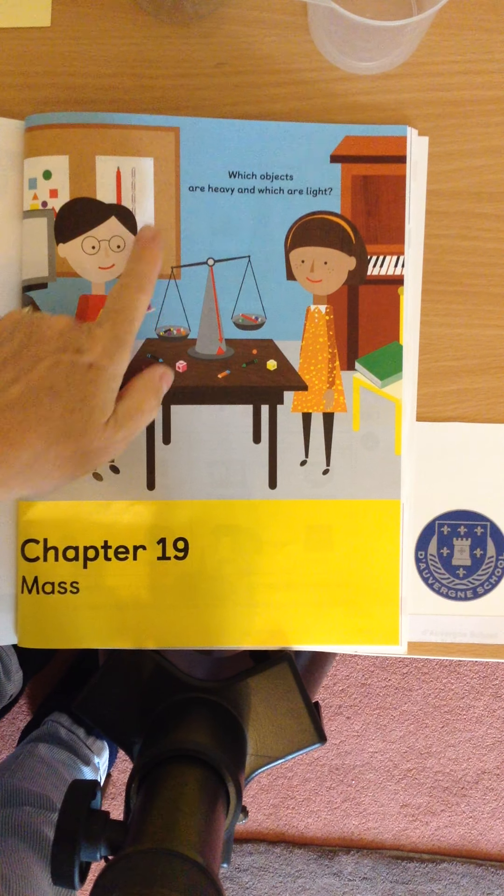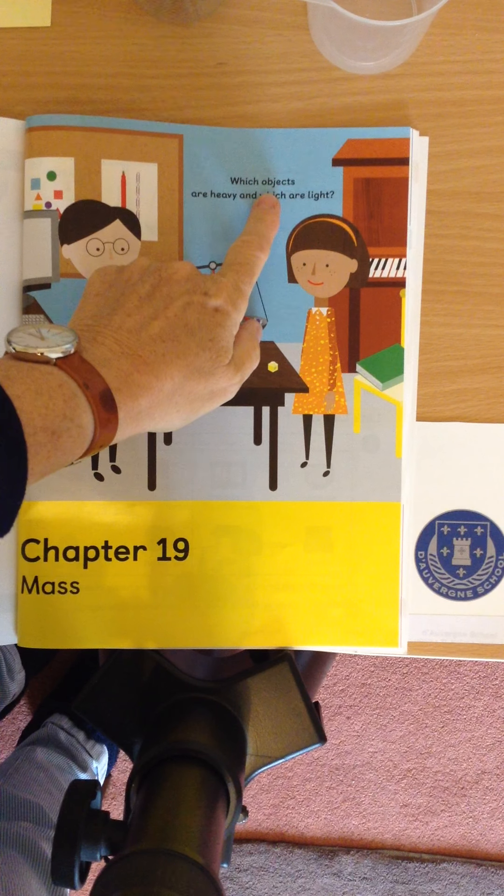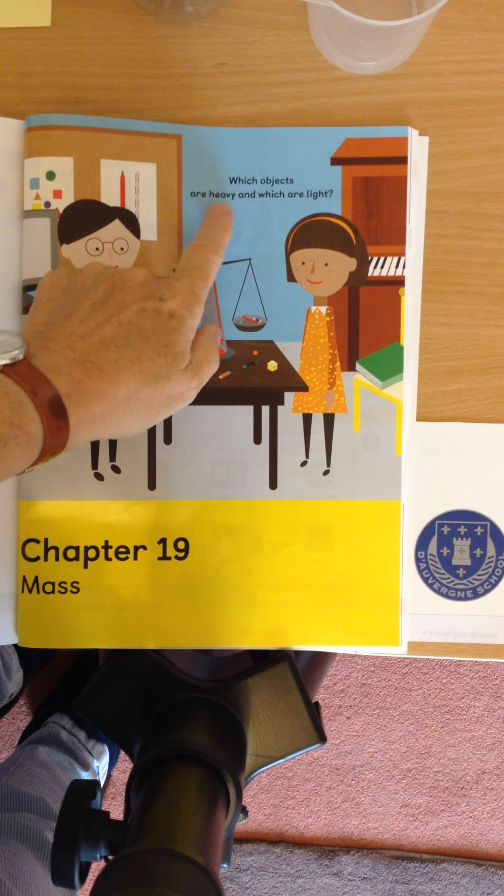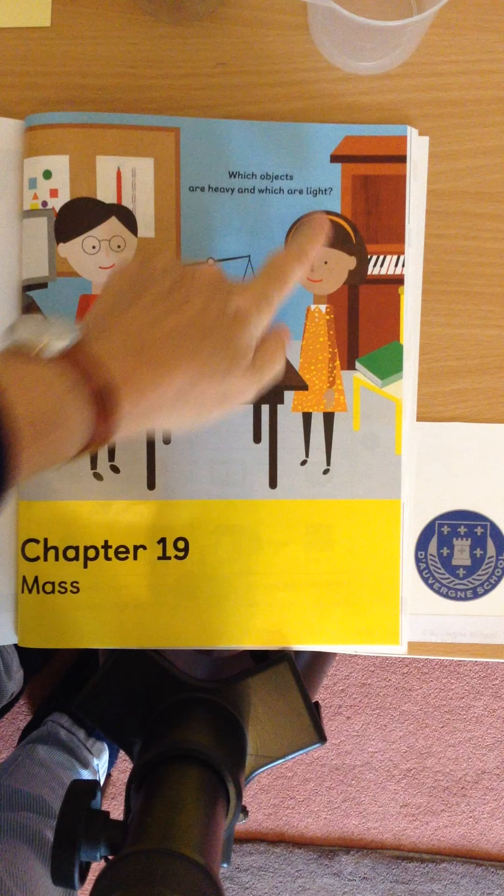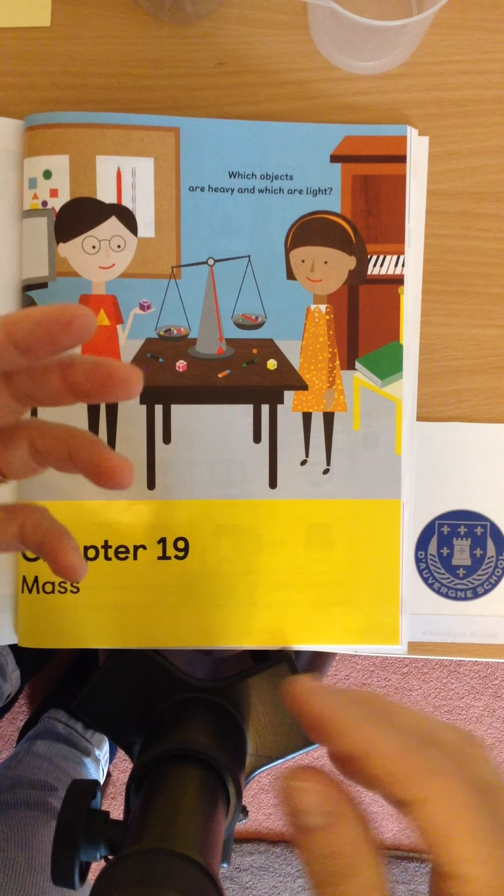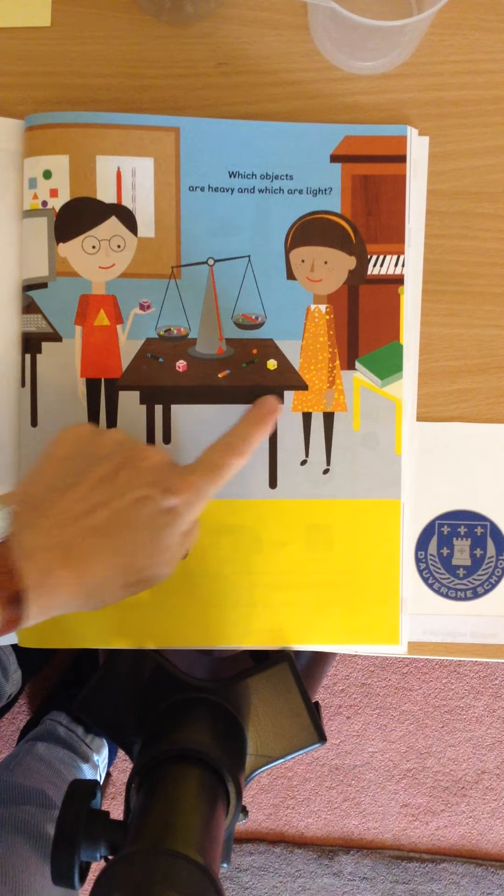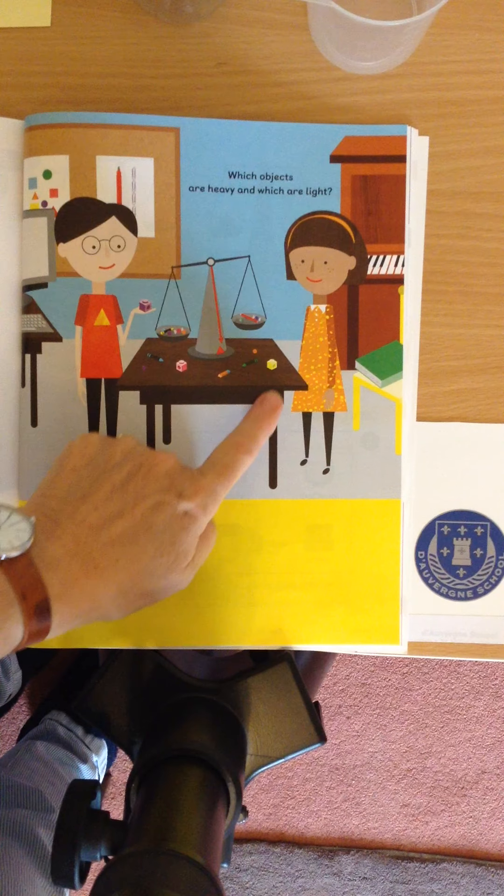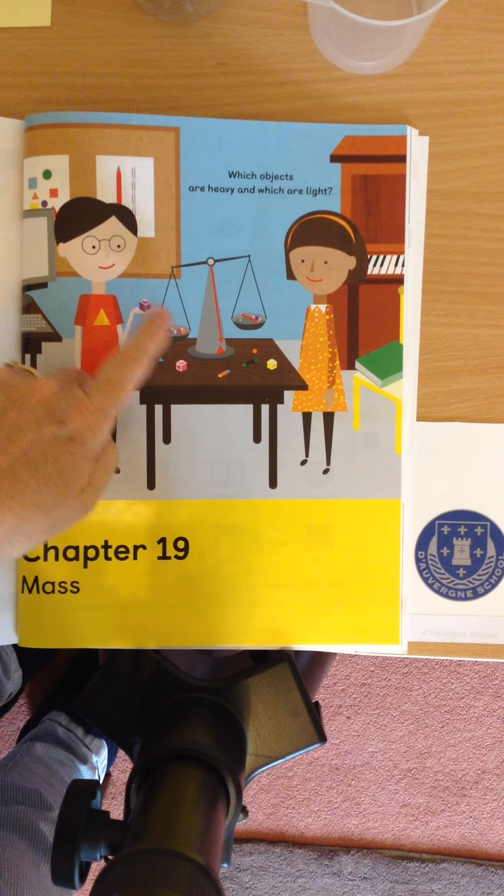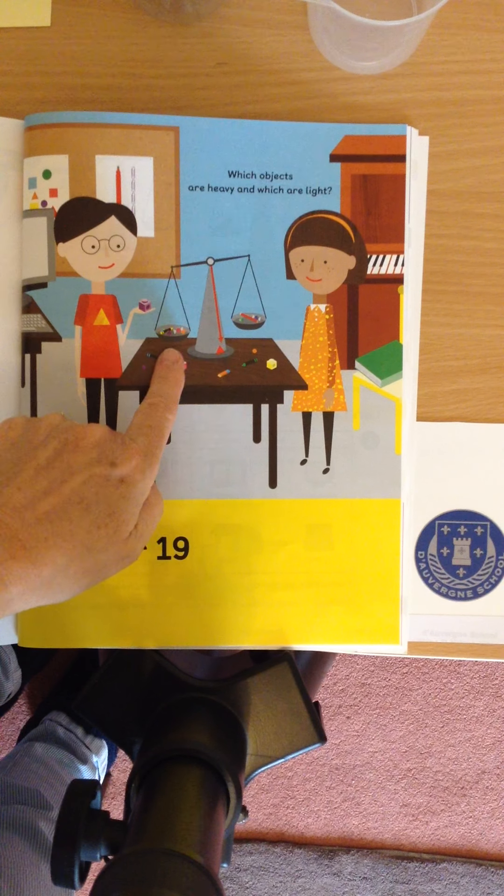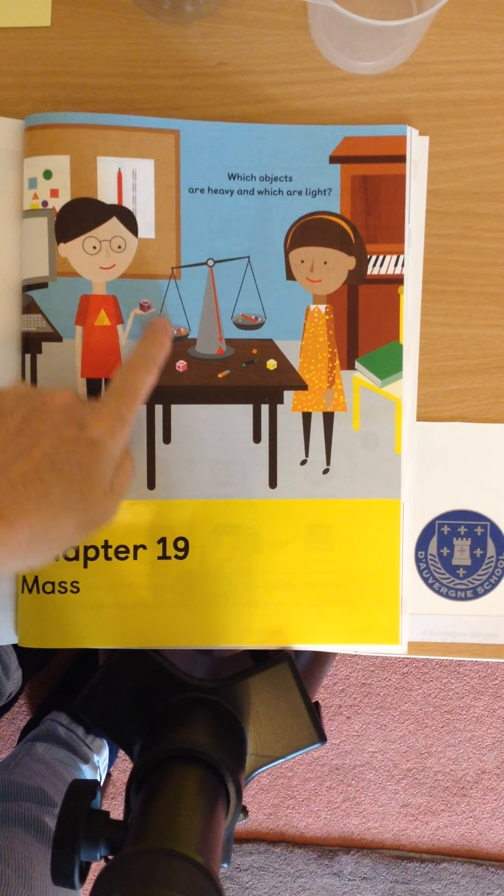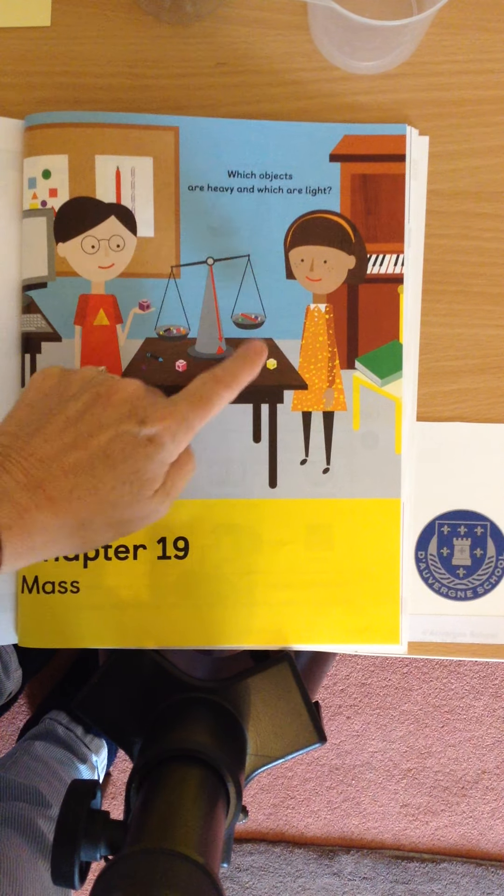And in the picture we've got a question. It says which objects are heavy and which are light? So in mass we're looking at what's heavy and what's light. And on the table there are a variety of objects and the boy and the girl are putting them onto our weighing scales, two pan weighing scales.